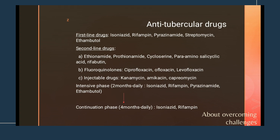The last topic is anti-tubercular drugs, which are essential in pharmacotherapy. The first-line anti-tubercular drugs include five drugs: isoniazid, rifampin (rifampicin), pyrazinamide, streptomycin, and ethambutol. These first-line drugs are used initially, and if the patient does not respond adequately, second-line drugs are then prescribed.